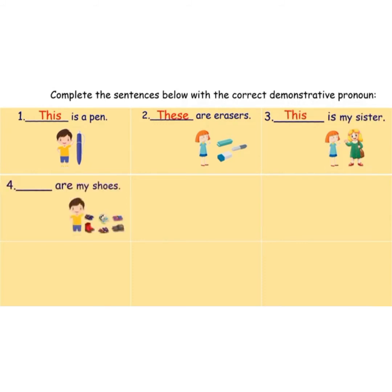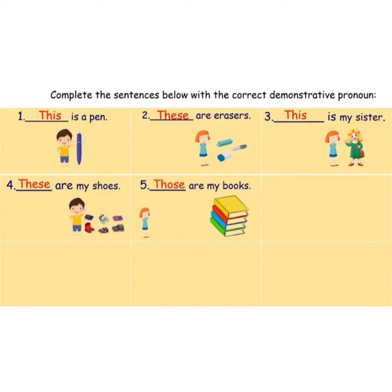Fourth: 'Dash are my shoes.' Fill in the blank with the correct demonstrative pronoun. The answer is: 'These are my shoes.' Fifth: 'Dash are my books' — far, plural. The answer is: 'Those are my books.'